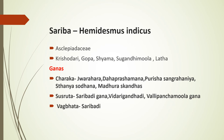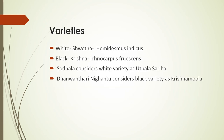There are two varieties: Shweta Shairiba, which is Hemidesmus indicus, and Krishna Shairiba, which is Ichnocarpus frutescens — spelled F-R-U-T-E-S-C-E-N-S. Sodala considers the white variety as Utpala Shairiba, so wherever the reference Utpala Shairiba is found, it refers to Shweta Shairiba. Dhanvantari nighantu considers the black variety as Krishnamula. All nighandus recognize only two varieties: Shweta and Krishna.